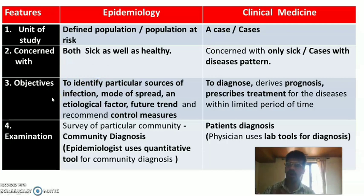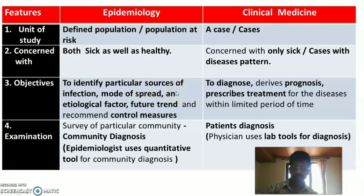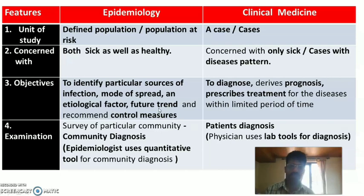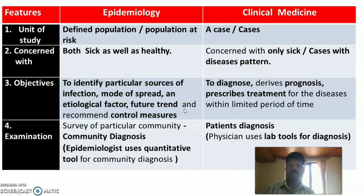The third difference is objectives. The main objectives of epidemiology are to identify the source of infection, its mode of transmission, various etiological and precipitating factors, the significance and future trend of the problem, and to recommend control and preventive measures.